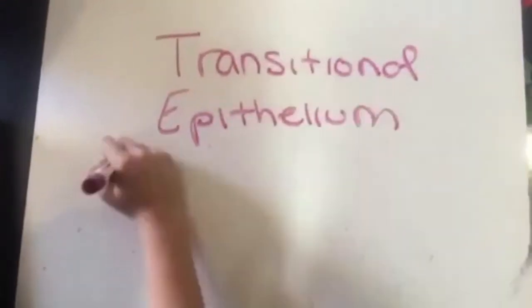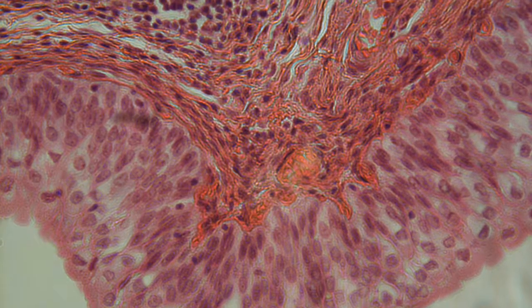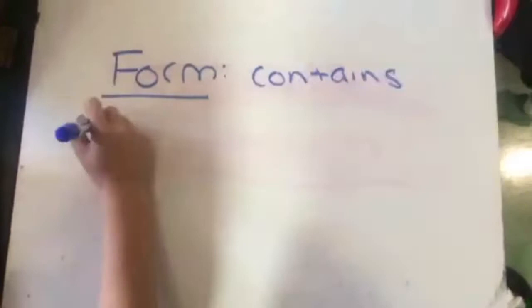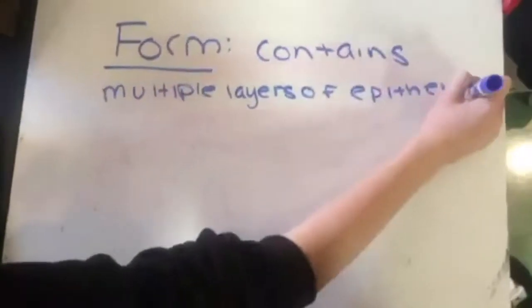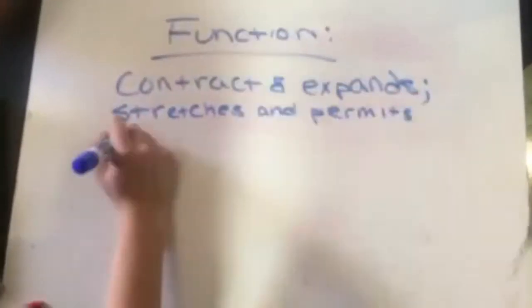Transitional epithelium. It contains multiple layers of epithelium cells that can expand and contract. It stretches and permits distension of the urinary organ by held urine.